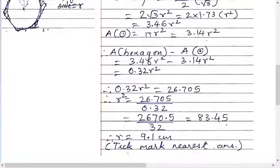Saying is simple but dividing is difficult. You have to try it yourself. So 83.45, then r equals square root of 83.45, 9.1.